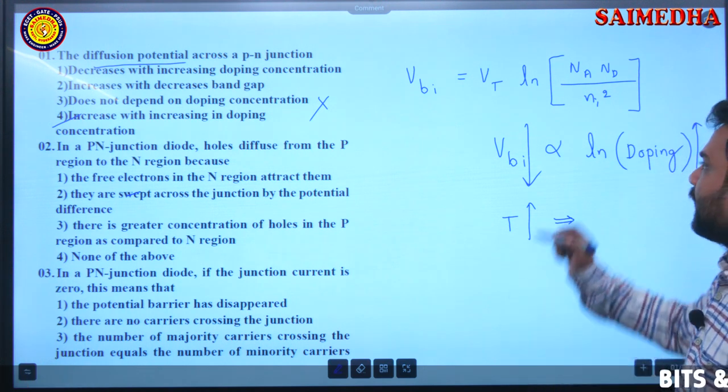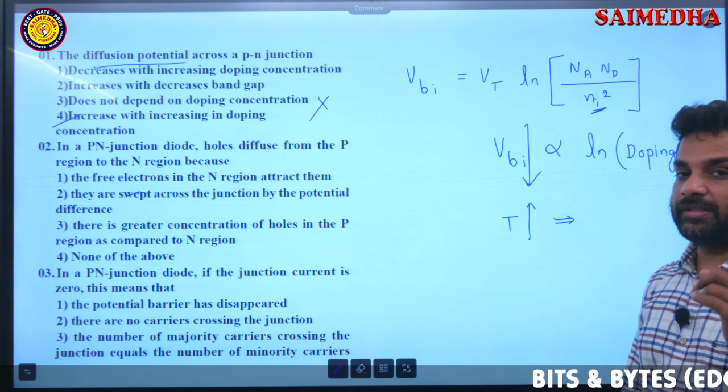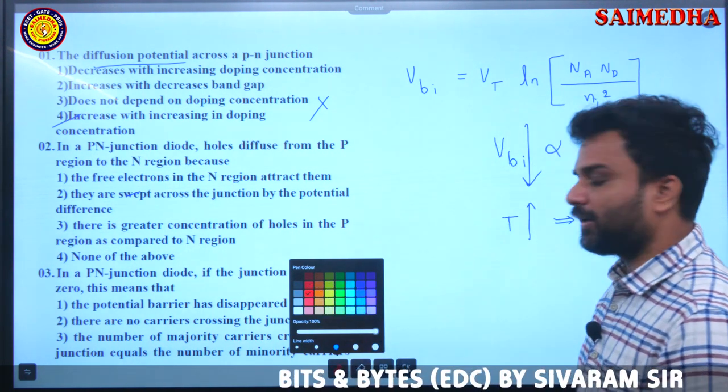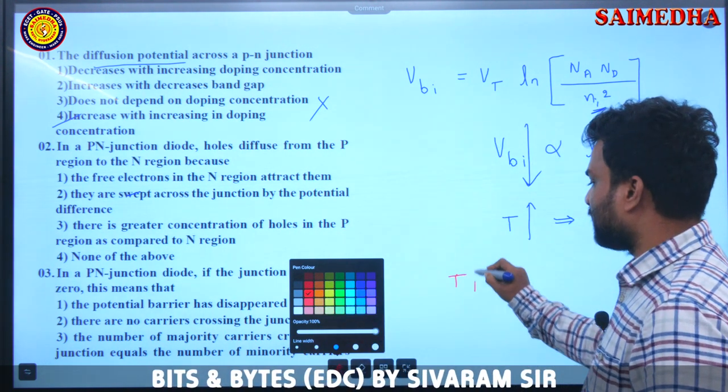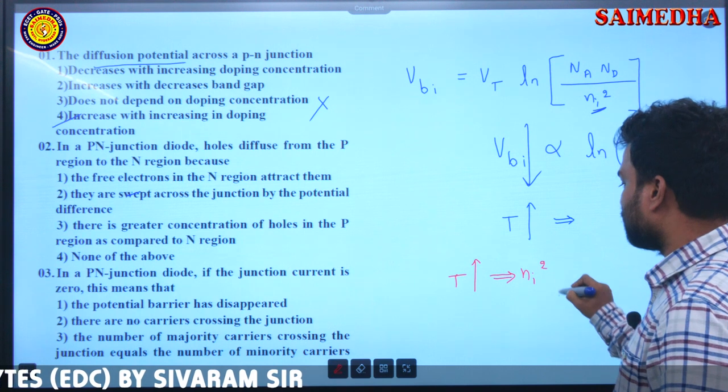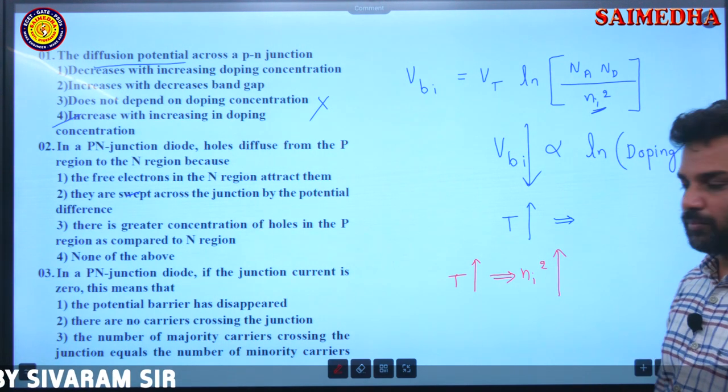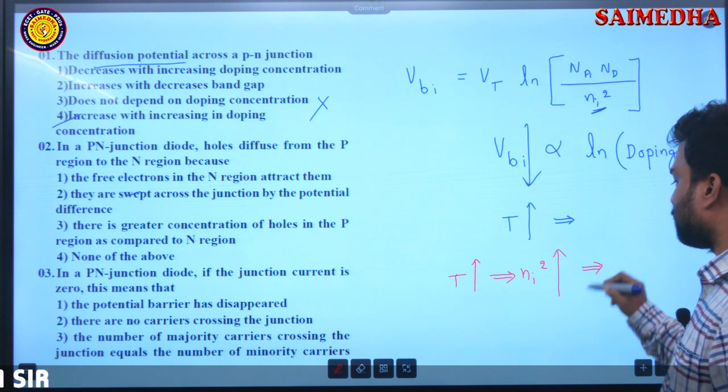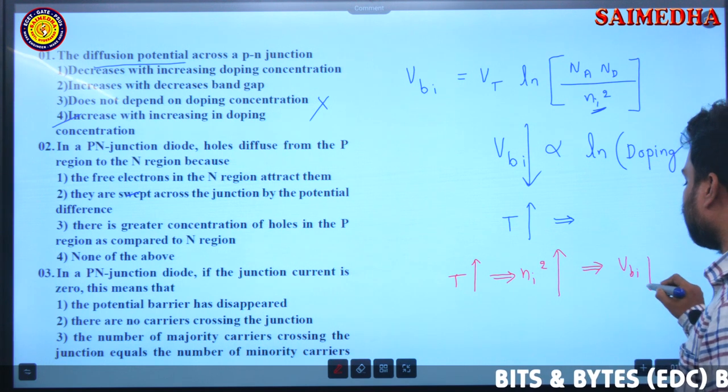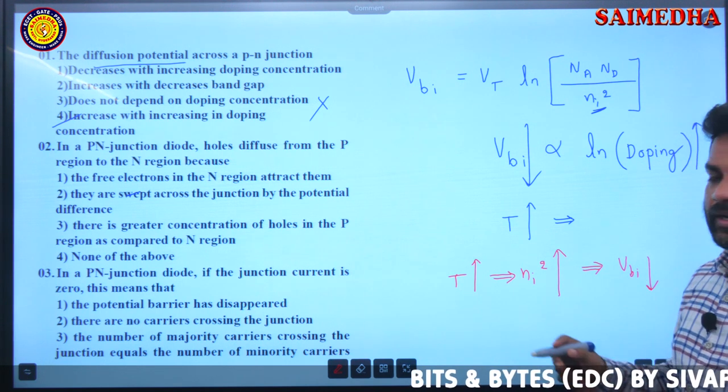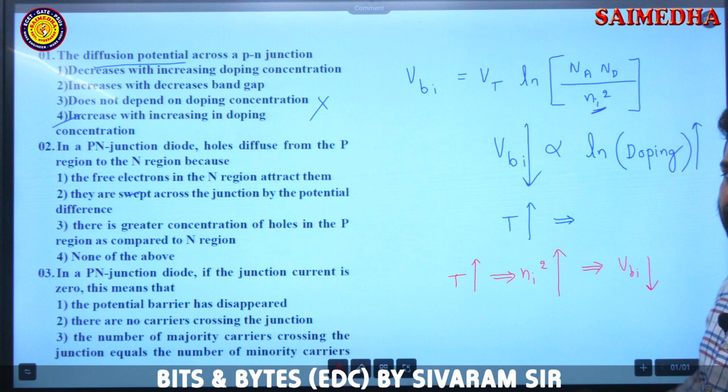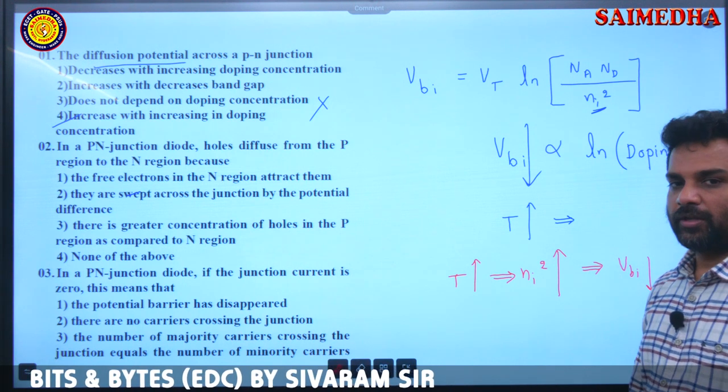Here, Ni square is temperature dependent. So as temperature increases, Ni square value increases. Ni square value increases, inbuilt potential, contact potential, diffusion potential VBI decreases. So as temperature increases, VBI decreases. One important point.